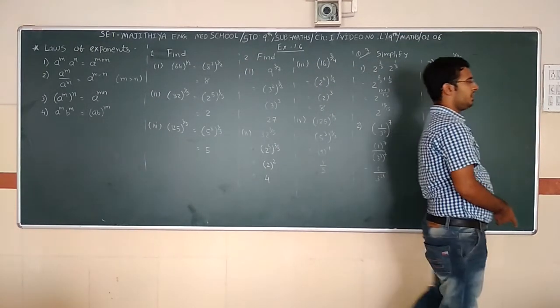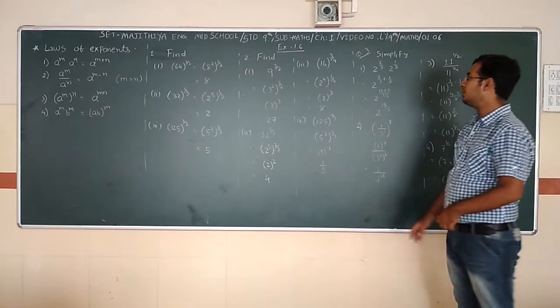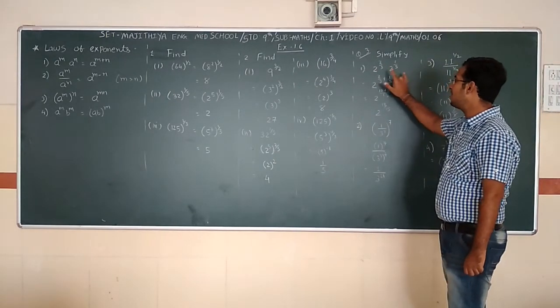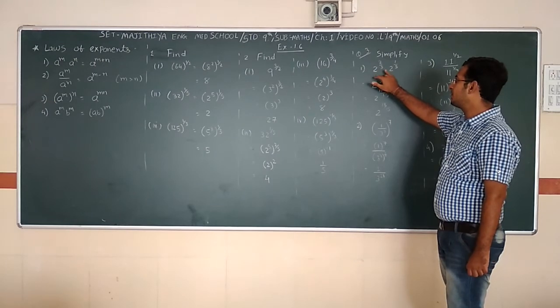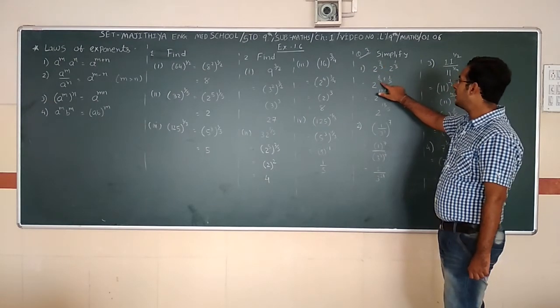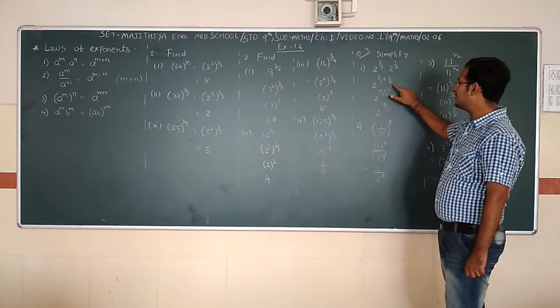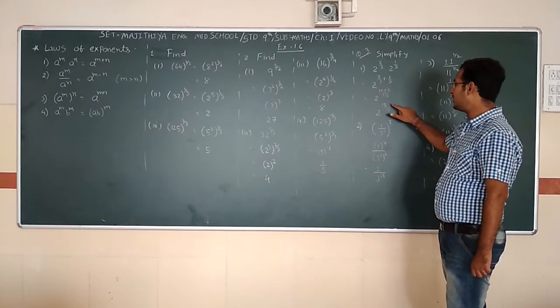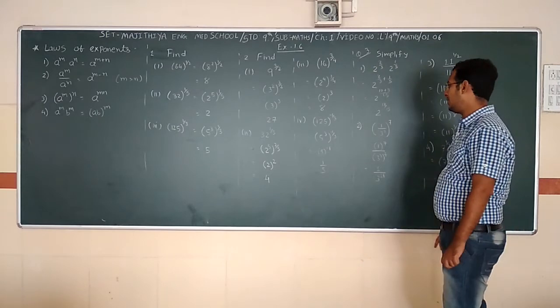Question number 3: Simplify using laws of exponents. Base is the same, so in exponent we add. Common denominator is 15: 2/5 becomes 6/15, 1 becomes 15/15, 1/3 becomes 5/15. Adding: 6+15+5 = 26/15.